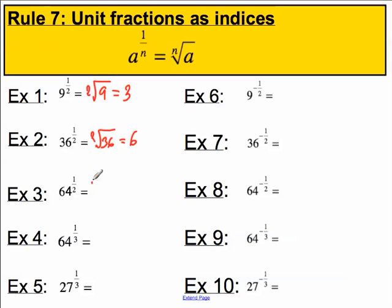Sixty-four to the half, again, the square root of 64. What number multiplies by itself twice to get 64? Well, the answer is eight.